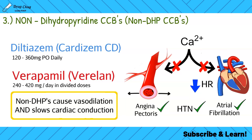In patients with bradycardia — an already slow heart rate — you definitely don't want to use a non-DHP calcium channel blocker, as it slows cardiac conduction further. Additionally, if a patient is already on a beta blocker, do not add a calcium channel blocker, as the combination could stop or dangerously slow the heart.